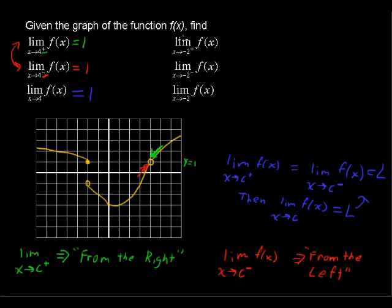Now let's look at the next example — switching to green. We're taking the limit of the function as x approaches negative 2. The negative sign in front of the number means negative 2, and the plus sign after the number means coming in from the right. So coming in from the right, along the graph going up — as x approaches negative 2 from the right, the y value equals negative 1. So the limit equals negative 1.